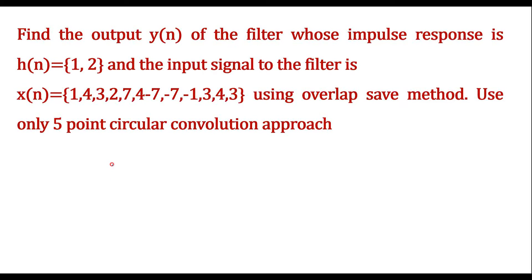In this video, let me consider one numerical on the overlap and save method. Find the output y[n] of the filter whose impulse response is h[n] = {1, 2} and the input signal to the filter is x[n], using the overlap save method. Use only 5-point circular convolution approach.